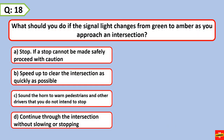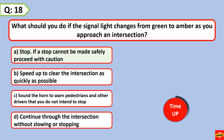What should you do if the signal light changes from green to amber as you approach an intersection? Stop. If a stop cannot be made safely, proceed with caution.